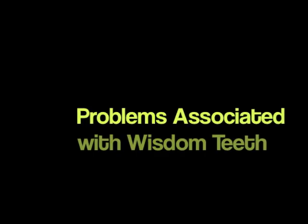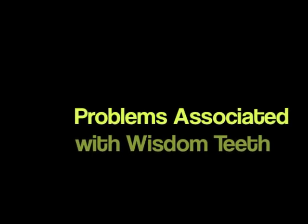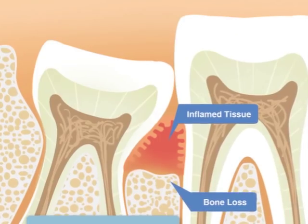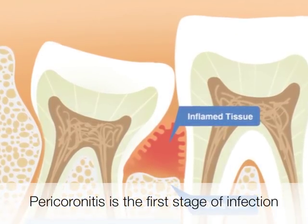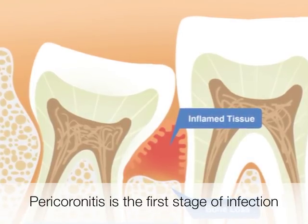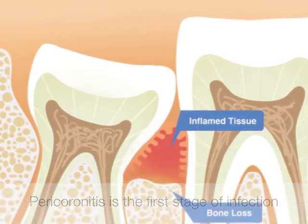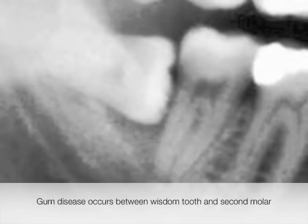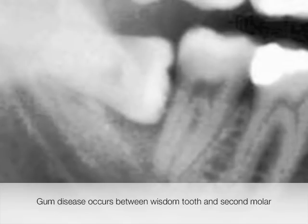Let's take a closer look at the problems associated with wisdom teeth. The most common problem that occurs is pain and swelling due to inflammation, also known as pericoronitis, which can lead to infection of the gum tissue. Gum disease, also known as periodontal disease, occurs between the second molars and the wisdom teeth as a result.